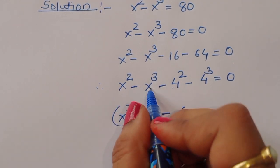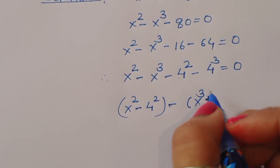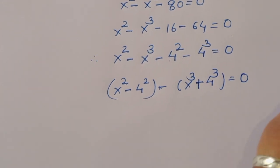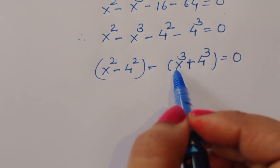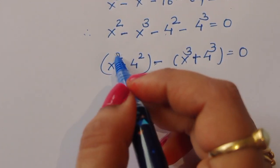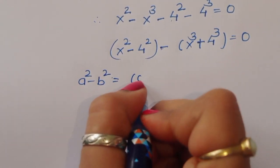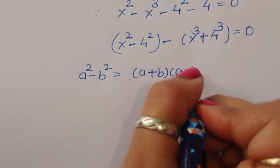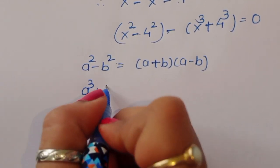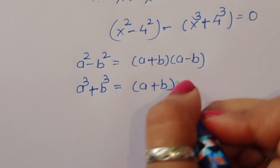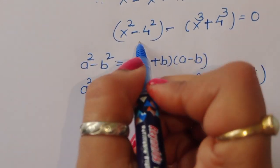Arranging our terms: x squared minus 4 squared, minus x cubed, taking minus as common, so x cubed plus 4 cubed equals 0. Now we have two formula forms: a squared minus b squared, and a cubed plus b cubed. The first formula: a squared minus b squared equals (a plus b)(a minus b). The second: a cubed plus b cubed equals (a plus b)(a squared minus ab plus b squared).